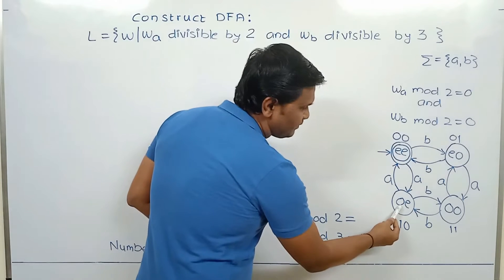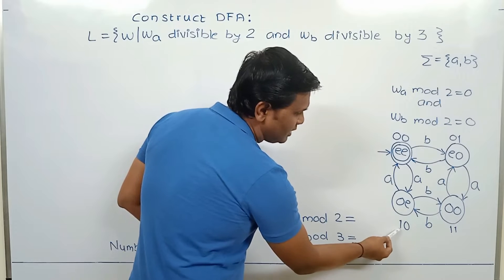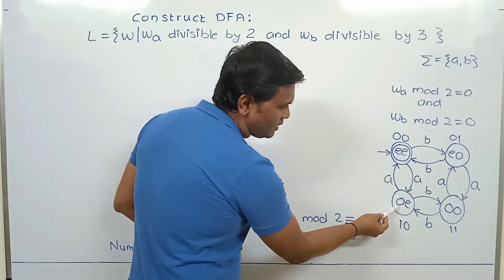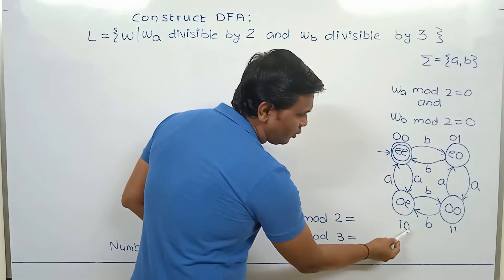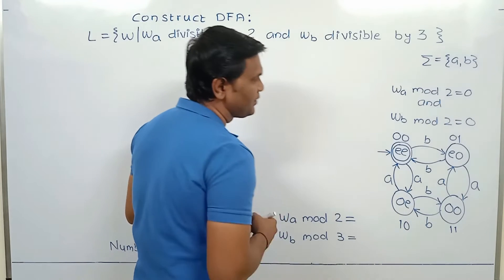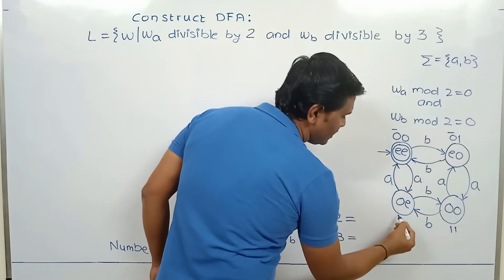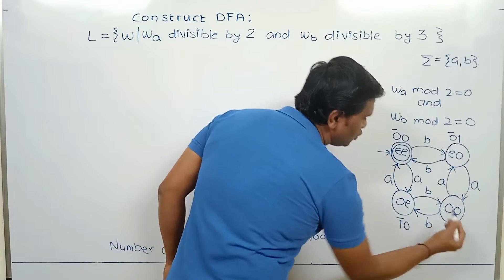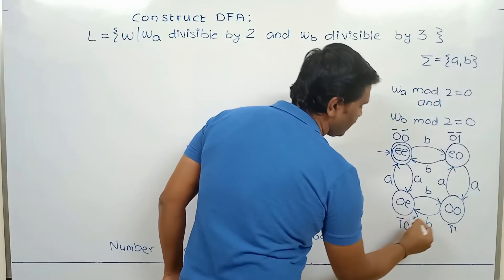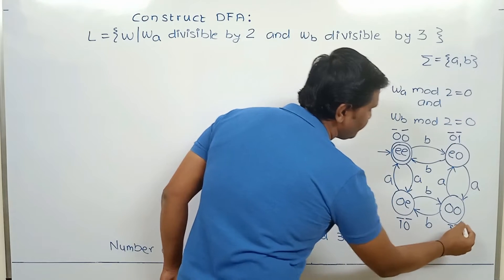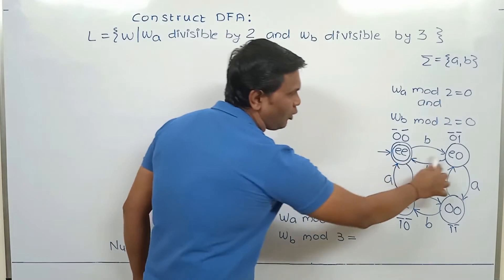For another state, number of A mod 2 is 1 (number of A's are odd) and number of B mod 2 is 0 (number of B's are even). So in any state, the first number represents number of A mod 2 and the second number represents number of B mod 2. We are handling A's vertically and B's horizontally.